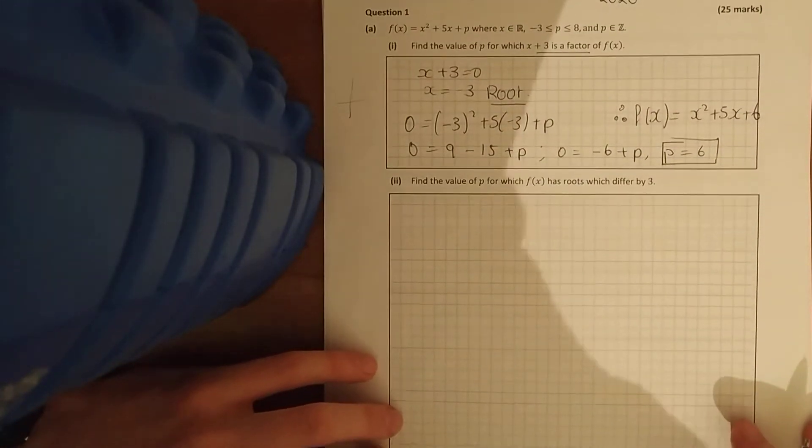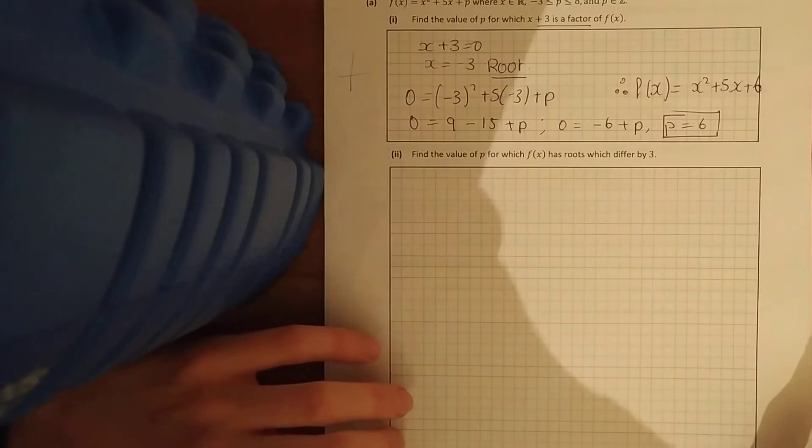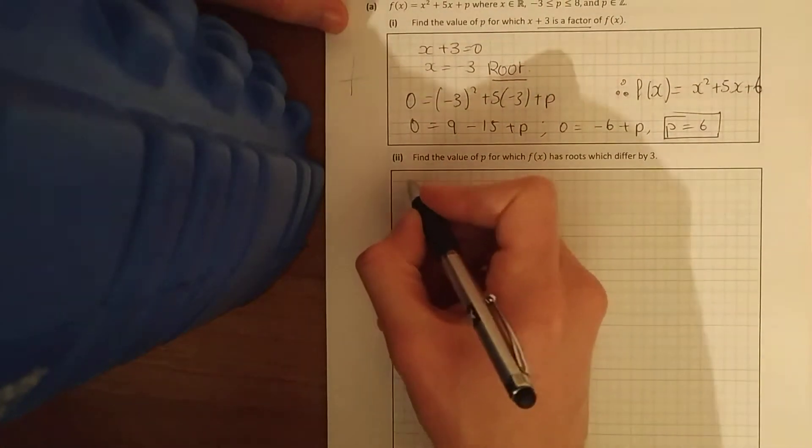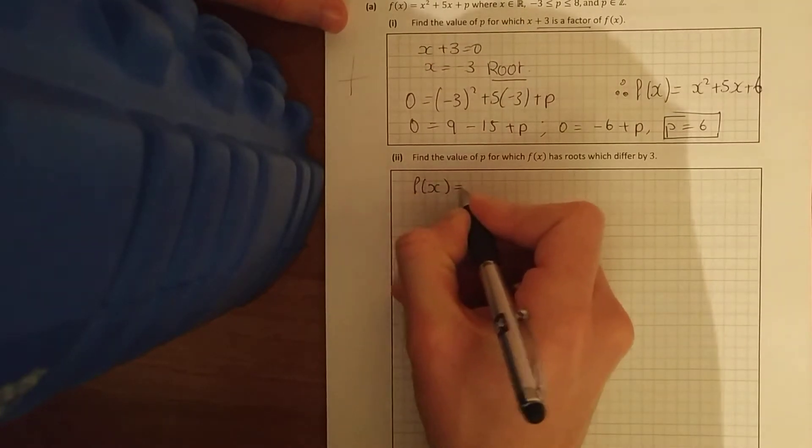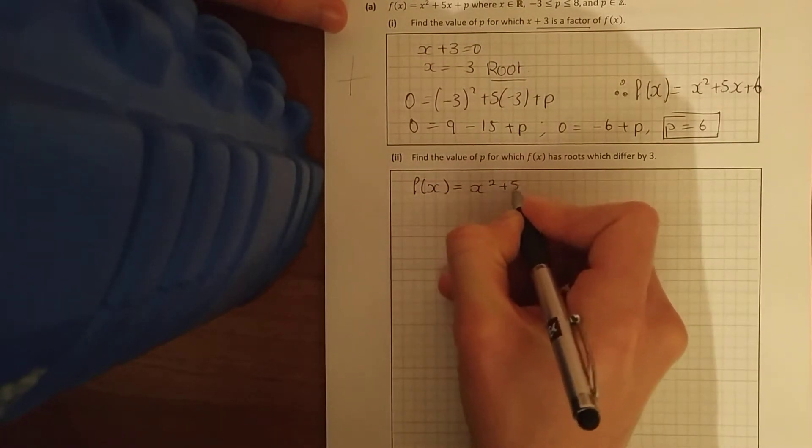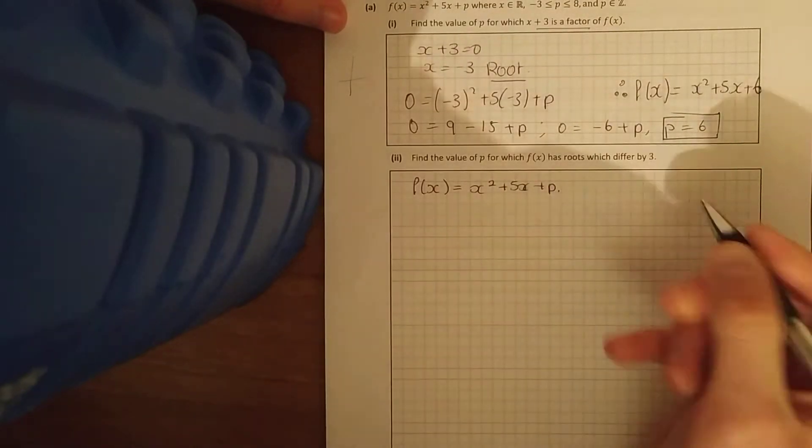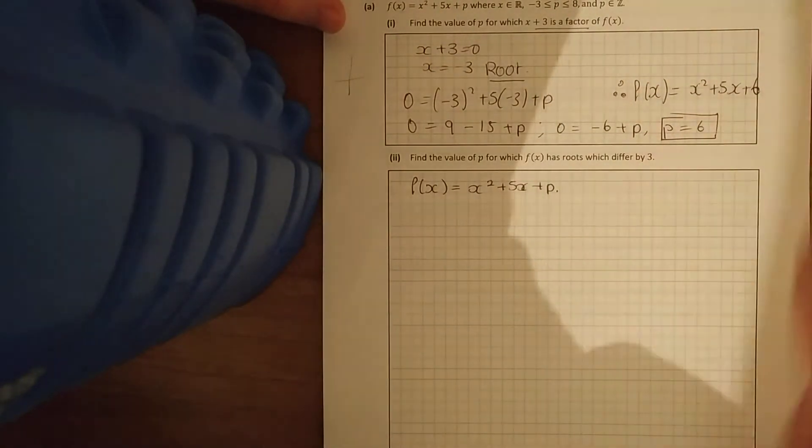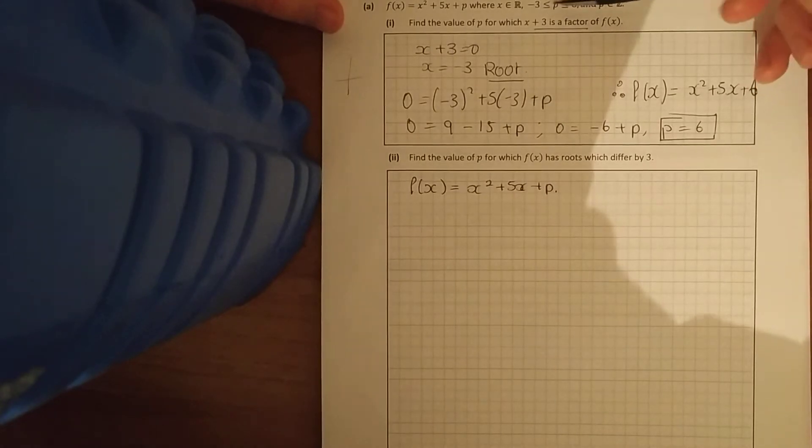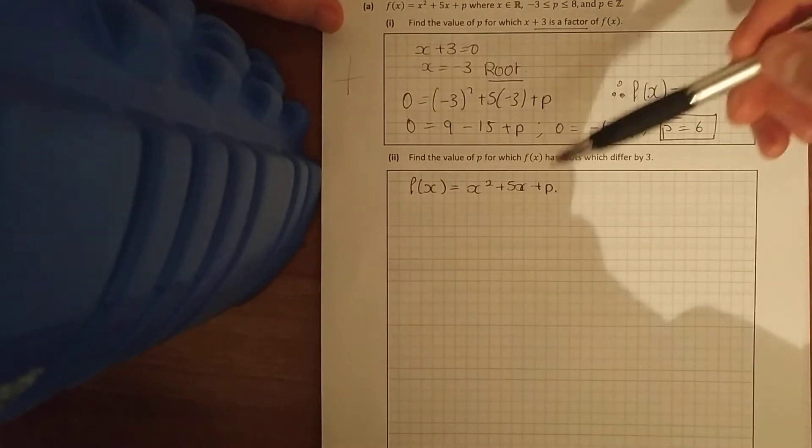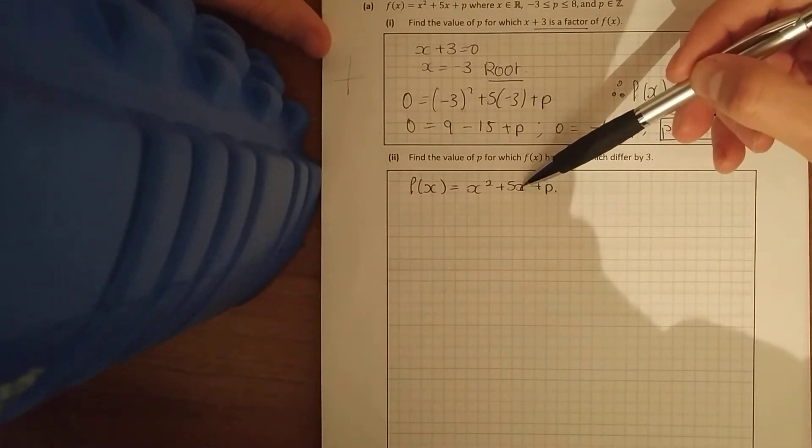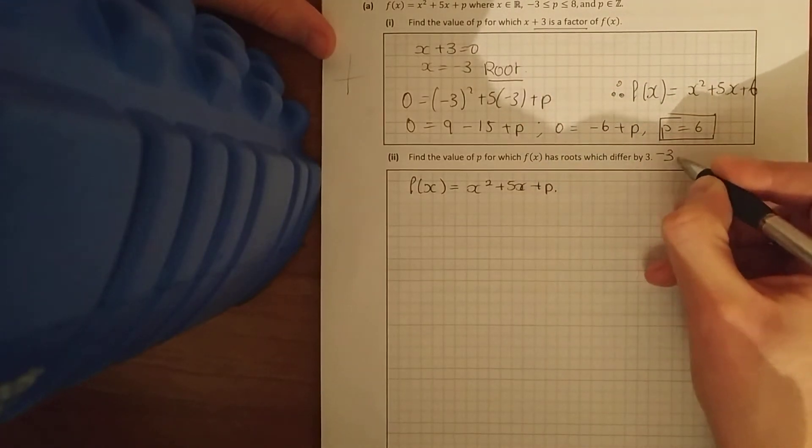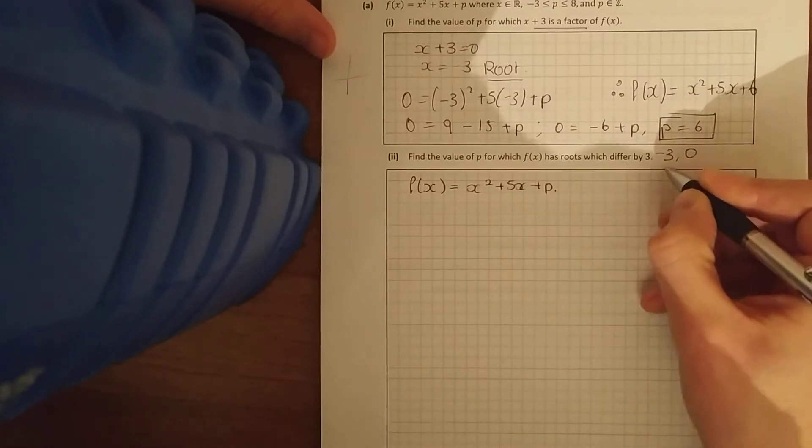Now the next thing, find the value of p where its roots differ by 3. There's different ways you can do this. If you're looking at that function 5x plus p and the roots differ by 3, and that value of p actually goes between minus 3 and 8, if you're just thinking of that quadratic, I was thinking all the roots there would be between minus 3 and 8.